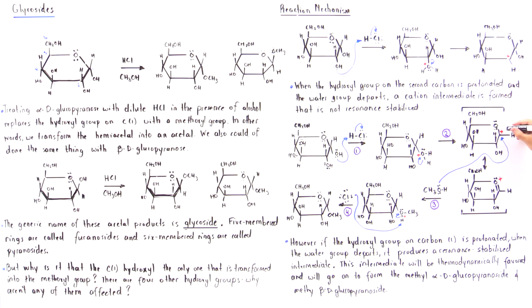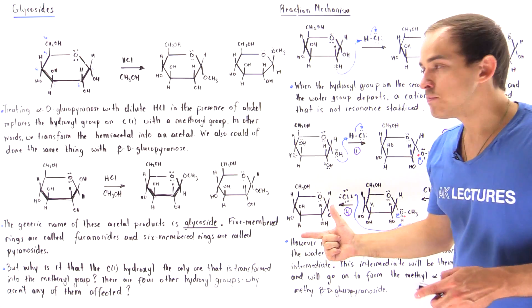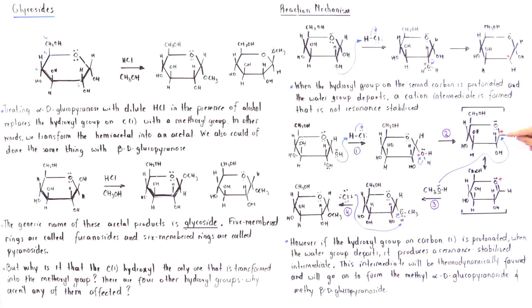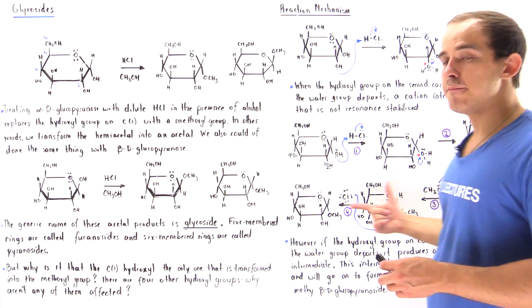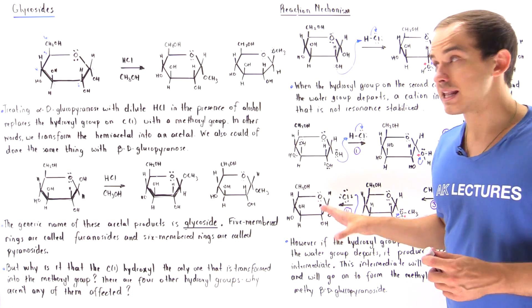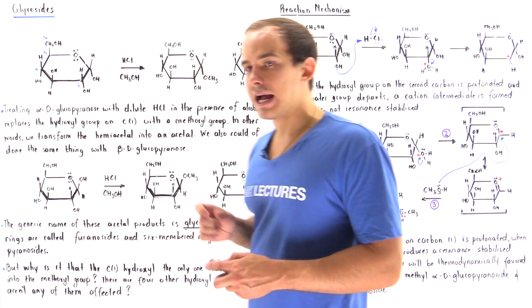The difference between these intermediates is that for non-C1 positions, the oxygen is simply too far away to form a stabilizing interaction and share the charge. At carbon one, the electronegative ring oxygen is adjacent to the positively charged carbon, allowing sharing of the positive charge. This makes the C1 intermediate thermodynamically more stable and lower in energy. That is exactly why only the C1 hydroxyl is replaced. In step three, the alcohol attacks this carbocation, and in step four, a base deprotonates the oxygen to give our final product — the glycoside, a six-membered pyranoside.